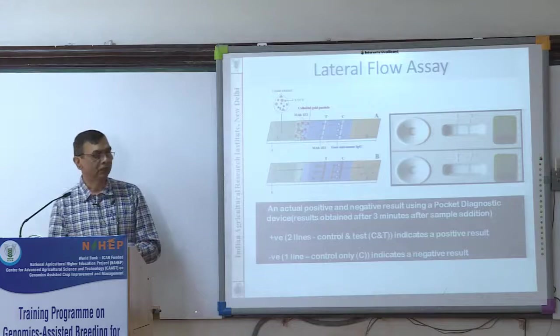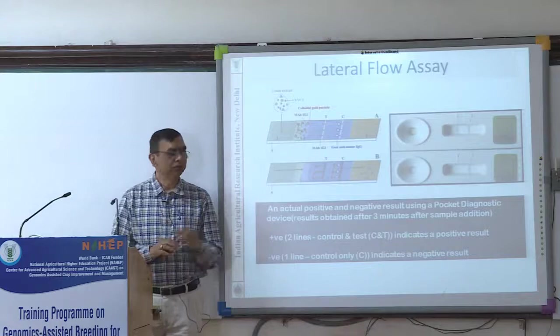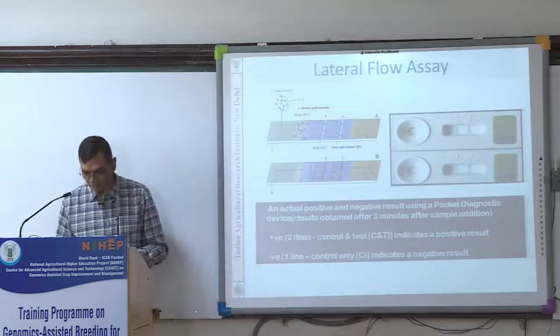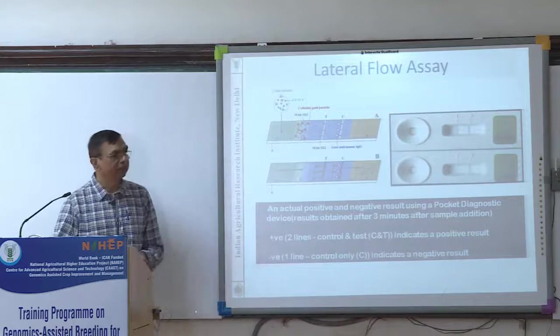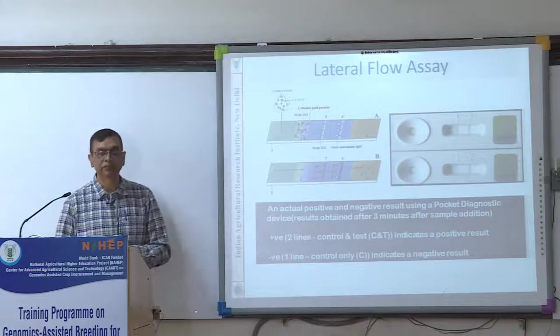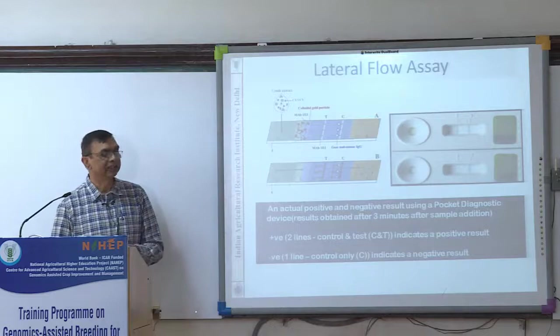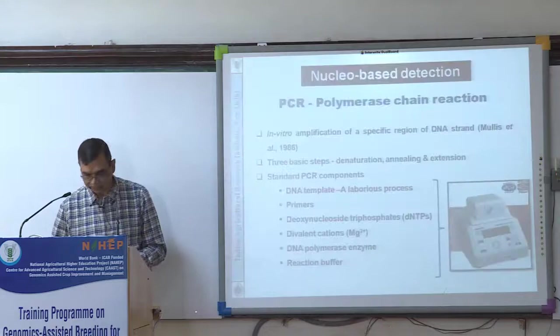The conventional ELISA takes about one to one and a half days. But now dipstick methods have come where you spend only 10 to 15 minutes — just like pregnancy tests. You take the sap, add it into the strip, and after 10 minutes, if both lines appear, that means the virus is present. This is commercially available for many viruses from Agdia and other companies.